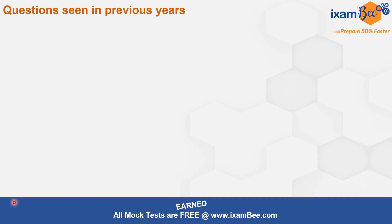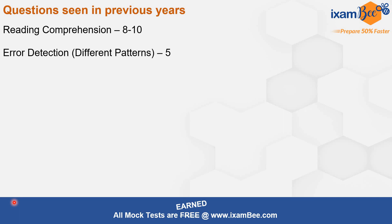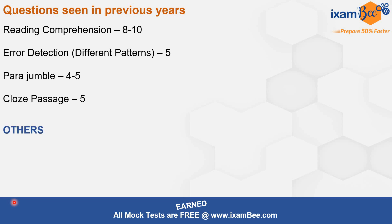Questions seen in the previous years were from these topics. We had reading comprehension — always around 8 to 10 questions in all past years. Then error detection — around 5 questions were always there, though the patterns may have changed in different years. Then para jumble — around 4 to 5 questions every year. And cloze passage — 5 questions every year.